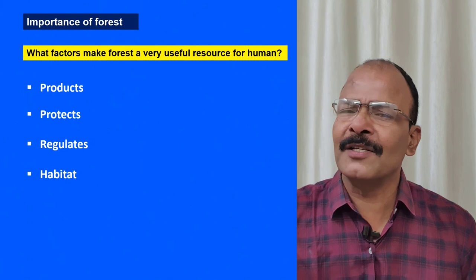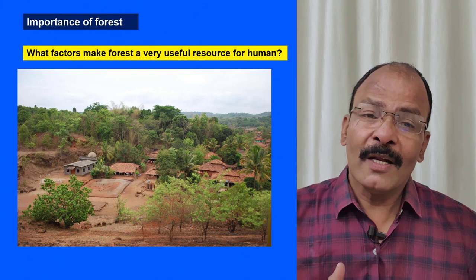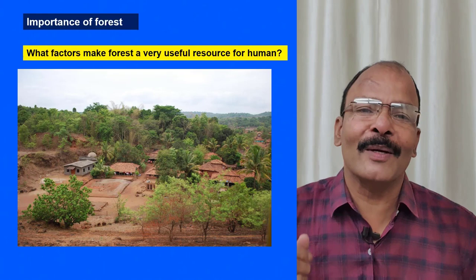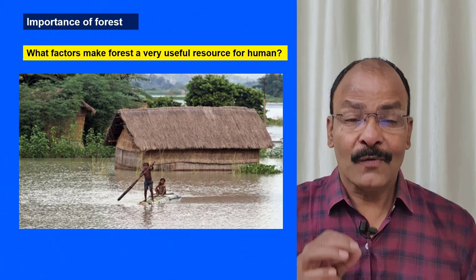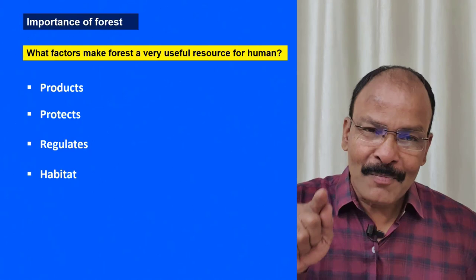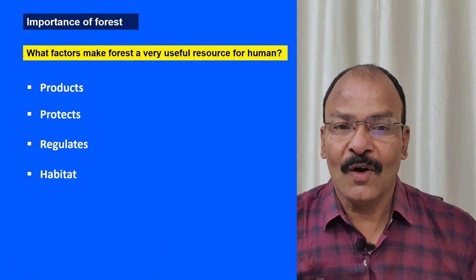Second, forest protects us. There are villages close to forests on mountains — the trees hold the soil and prevent soil erosion. When there is heavy rain on these mountains, the water comes down slowly. If you cut these trees, people living in the villages below will face floods. Third, forest regulates the environment — it absorbs carbon dioxide and gives us oxygen, helping maintain the cycle.